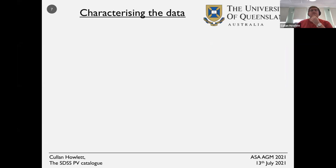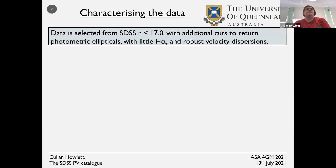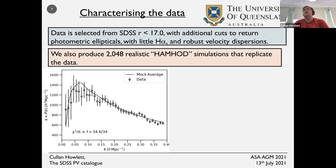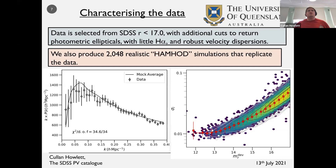The SDSS sample is trimmed to a magnitude limit in the R band of 17, with additional cuts to return only photometric ellipticals with very little H-alpha in their spectrum and robust velocity dispersion measurements. Alongside this data we are producing 2048 realistic simulations that replicate the data — both in terms of clustering (placing fake galaxies in realistic dark matter simulations to recover the correct galaxy power spectrum) and in terms of measurement errors characteristic of the data. The average mock clustering matches the data to very good precision.